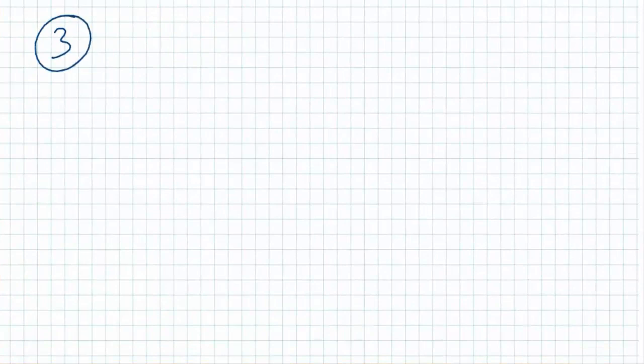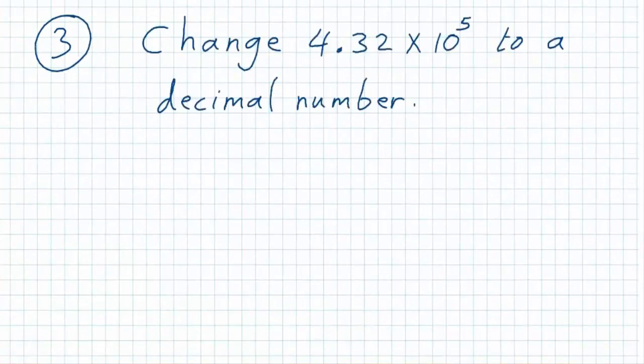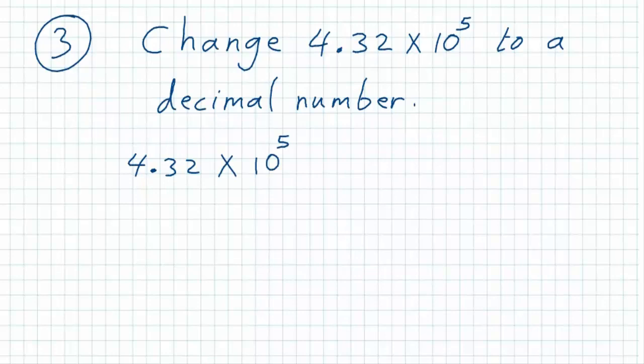Example three: Change 4.32 × 10^5 to a decimal number. So it's clear here that we have a scientific notation number and we are asked to change it to a decimal number. To change it to a decimal number without a calculator, looking to the power here,